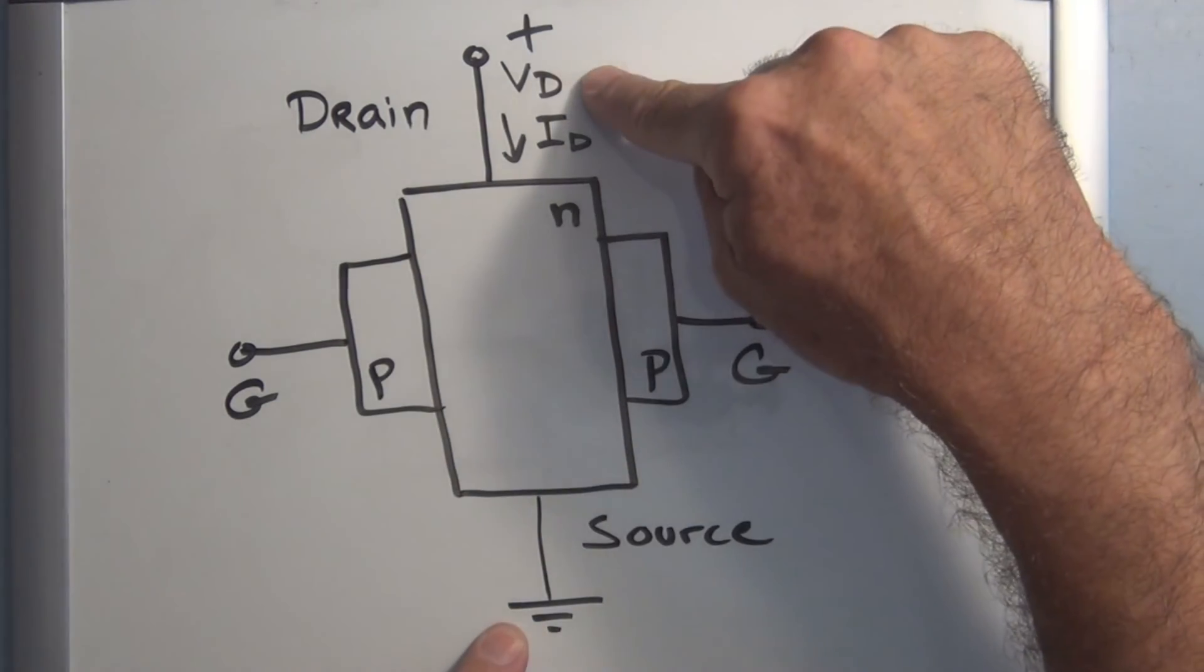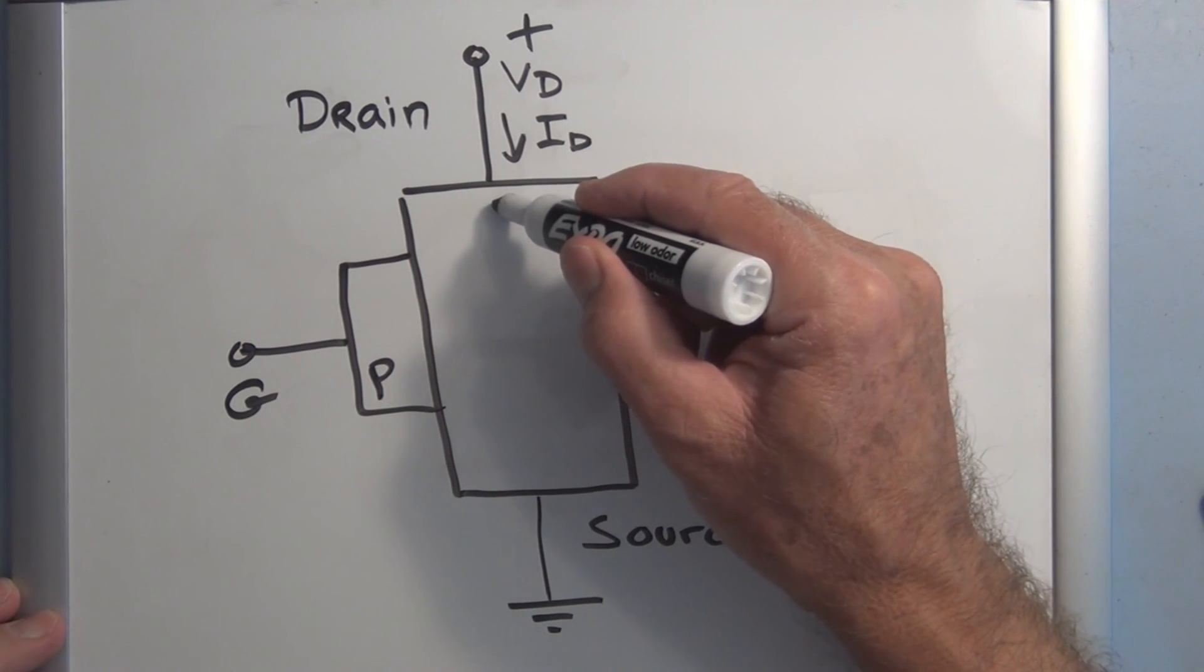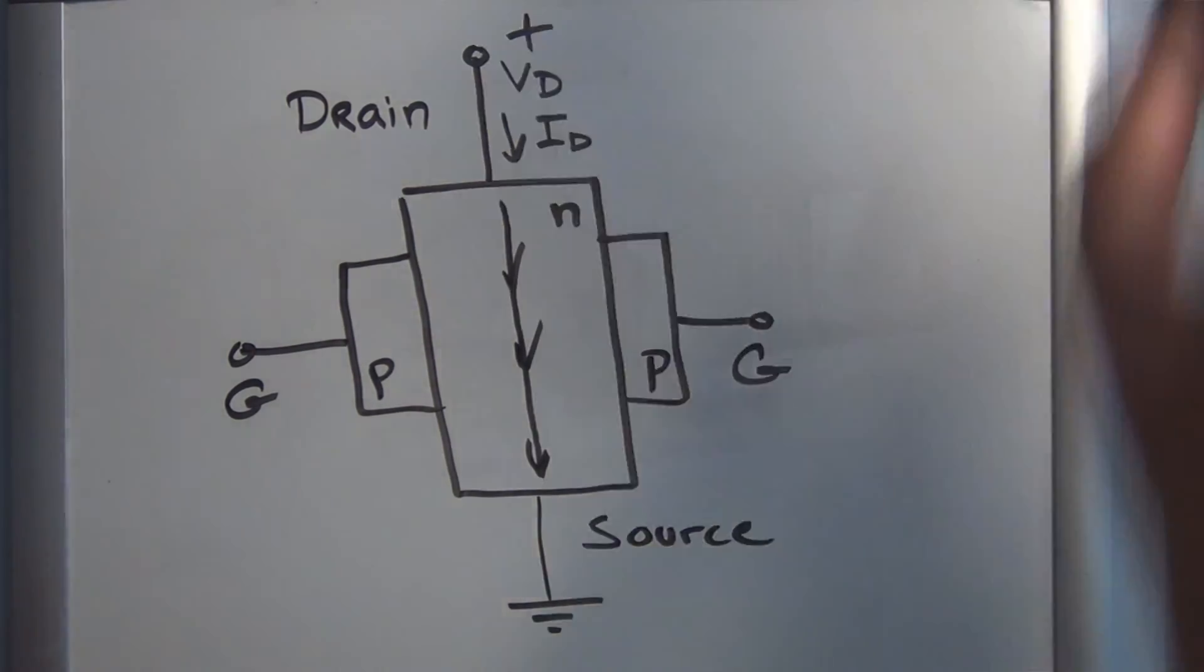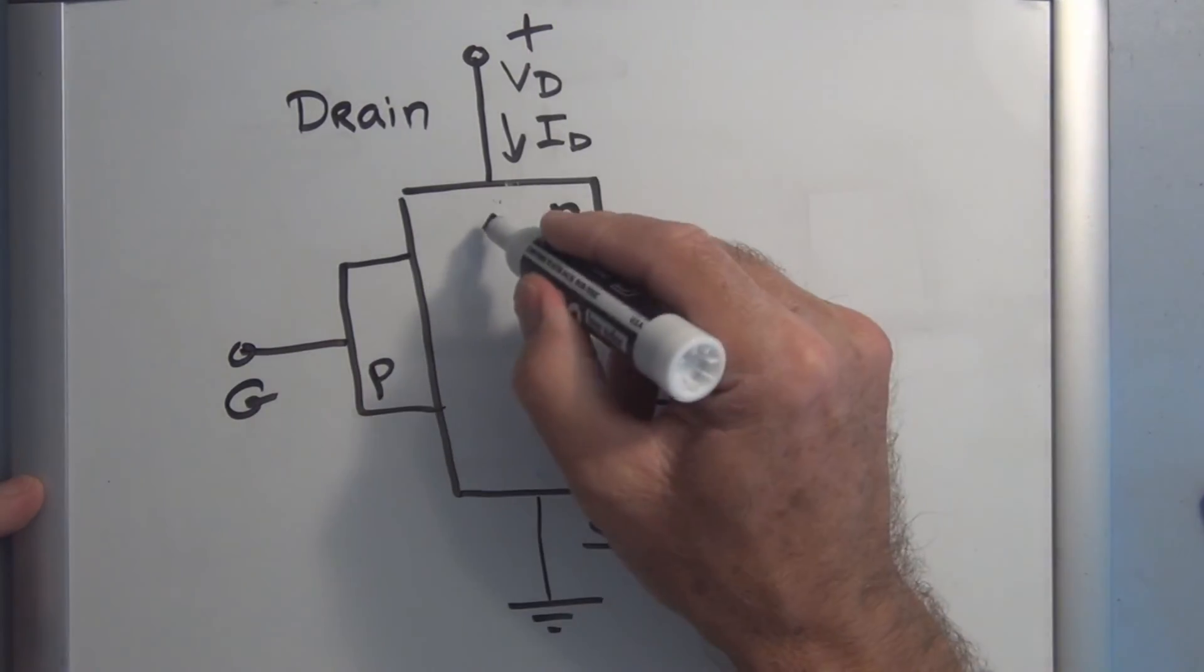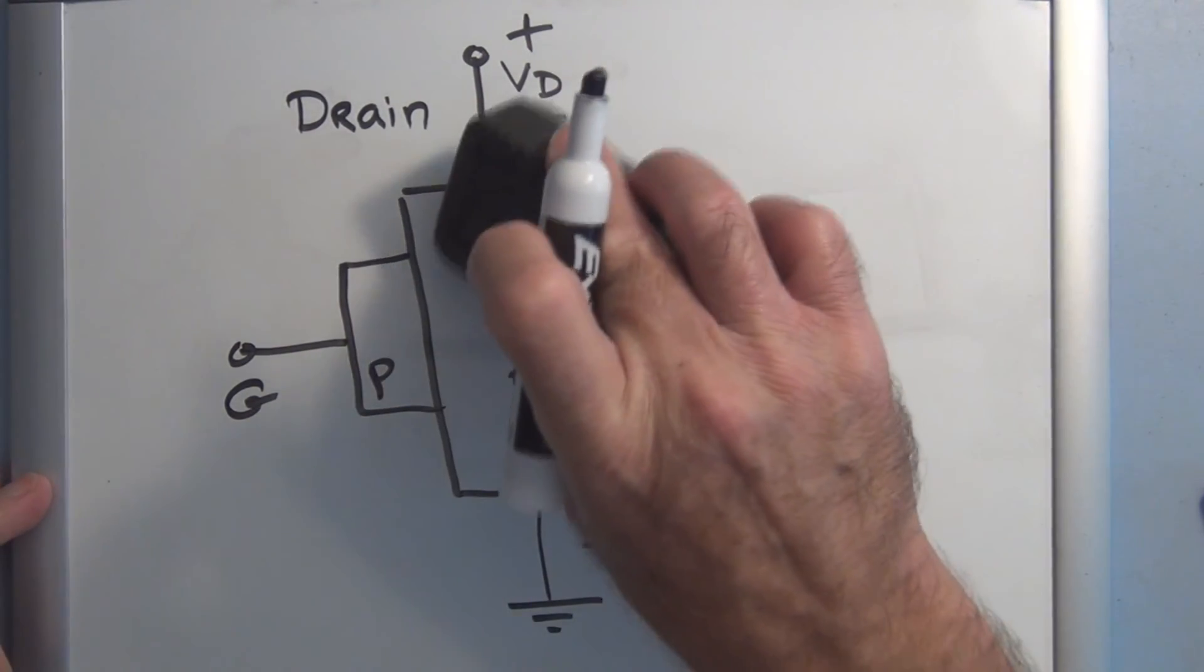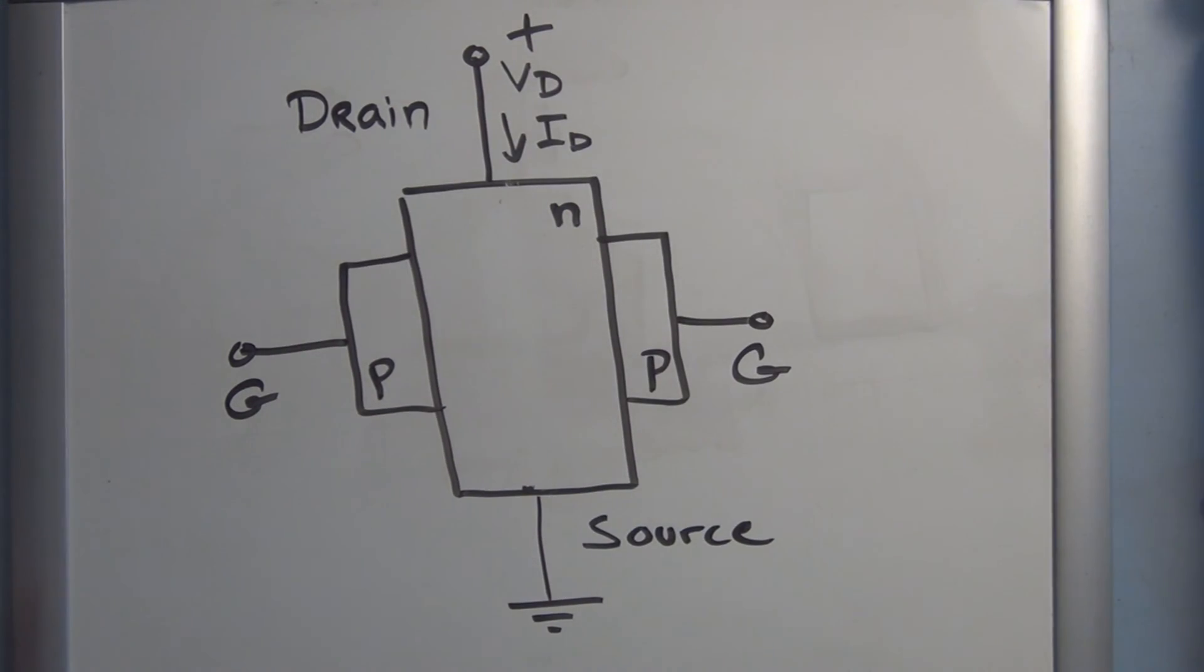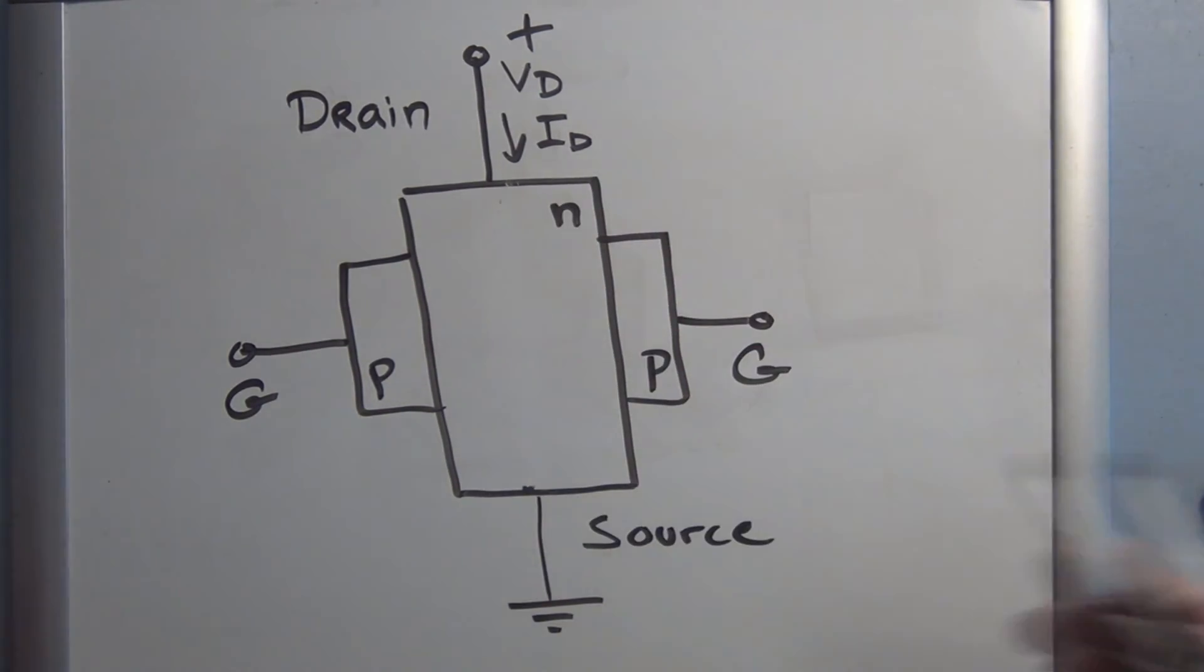And we have the drain and the source. You put a positive voltage on the drain and a negative voltage on the source. In this case, it's ground. So this is positive with respect to ground. And current will flow. Current has a path to flow from positive to ground. The electrons have a nice clear path to make it through this N material, which has an excess of electrons in it. So the current can flow without any restrictions.